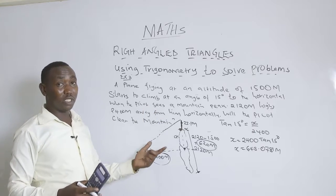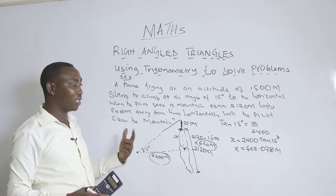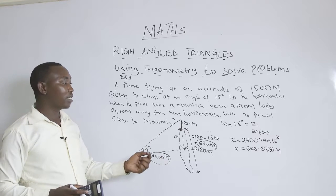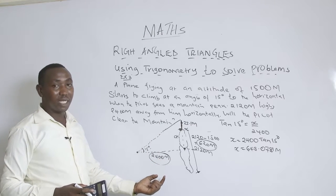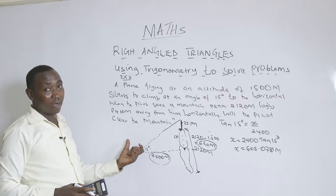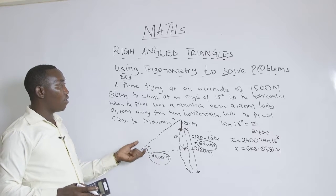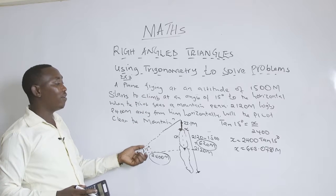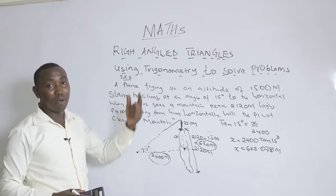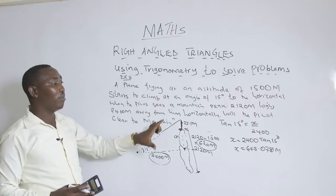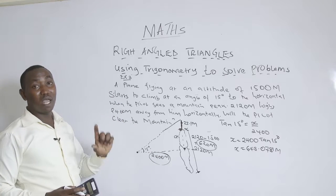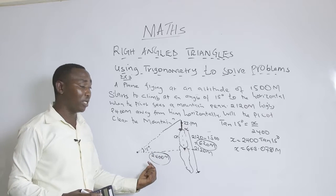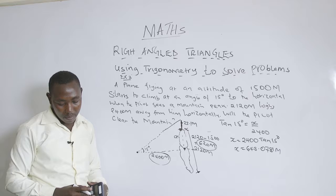So the distance above the mountain peak will be approximately 23.1 meters, meaning there will be no fatalities or accidents. However, if the pilot had discovered that 2,400 meters was insufficient, he would need to increase the climbing angle to safely clear the mountain. The pilot will be able to clear the mountain within the horizontal length of 2,400 meters.